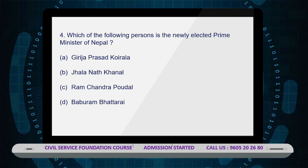The fourth question: Which of the following persons is the newly elected Prime Minister of Nepal? Option A: Girija Prasad Koirala, Option B: Jhalanath Khanal, Option C: Ramchandra Paudel, Option D: Baburam Bhattarai. The correct answer is Option C — Ramchandra Paudel.